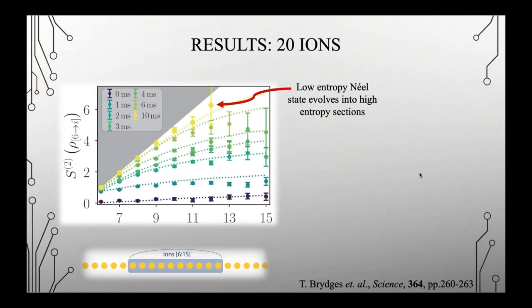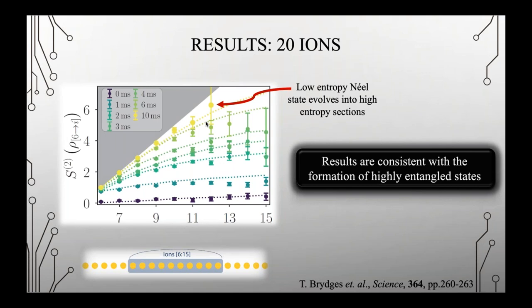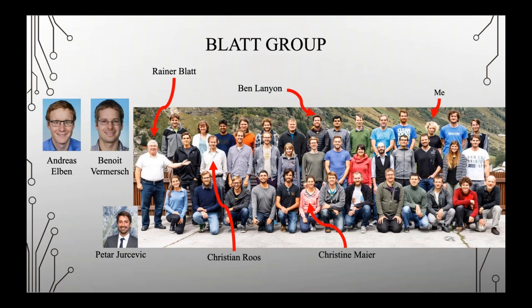Finally, we looked at a 20-ion chain. At that time, our single-ion addressing wasn't as good, so we prepared all 20 ions in the Néel state, evolved them under the Hamiltonian, and applied the protocol to the 10 middle ions — from ion 6 through to 15 — evolving out to 10 milliseconds. You can see the low-entropy initial Néel state evolving into very high entropy regions. This is consistent with the formation of highly entangled states in the system.